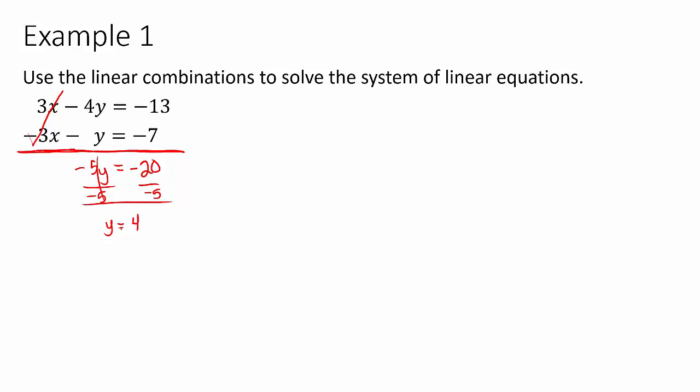So once we know what y equals, we're going to plug that back into either of the top two equations. It doesn't matter which one. Most of the time there's not even one that's easier than the other. If you don't like making choices, then just always pick the first one. 3x minus 4 times 4 equals negative 13. So I need to do 4 times 4, and then solve this for x by adding 16, which means 3x equals 3, and then dividing by 3.